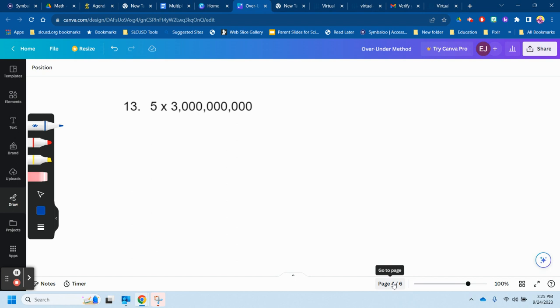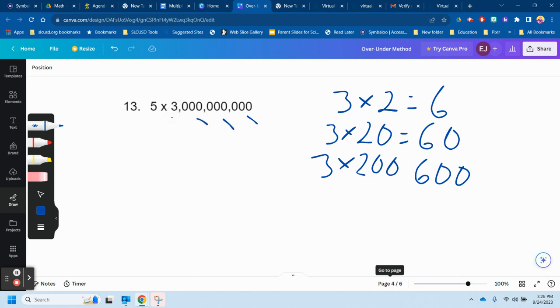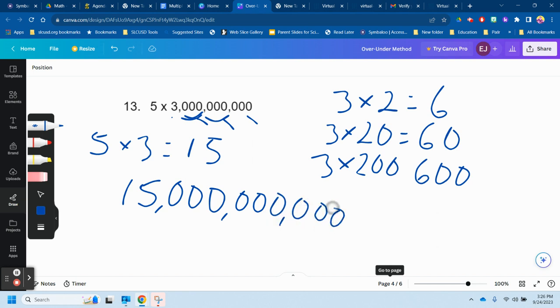So this one, if you know like 3 times 2 is 6, you know that 3 times 20 is 60. And if you know that 3 times 200, you just keep adding zeros here, 600. So if I have 5 times, this is the ones, thousands, millions, billions, 5 times 3 billion. I know what 5 times 3 is, 15. So 5 times 3 billion is 15 billion. Billions, here's the zero millions, zero thousands, and zero ones.